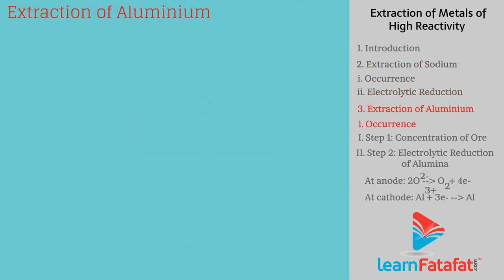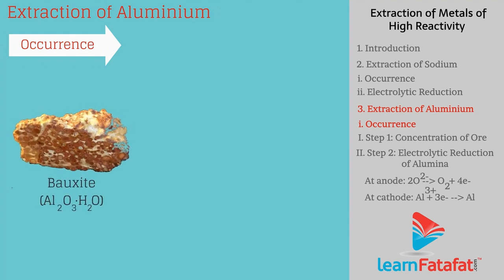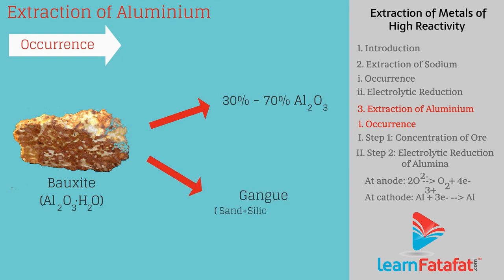Extraction of aluminium — Occurrence. Aluminium, being a reactive metal, occurs in combined form, that is, in the form of bauxite. Bauxite ore contains 30 to 70% Al₂O₃, and the remaining portion contains gangue made of sand, silica, and iron oxide. Extraction of aluminium takes place in two steps.